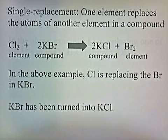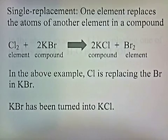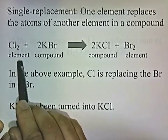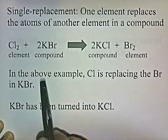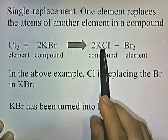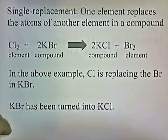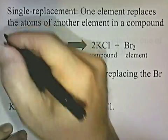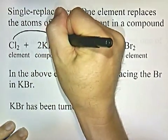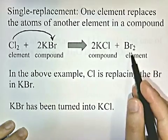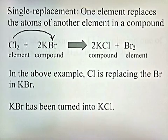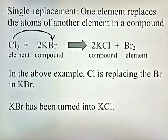Single replacement: one element replaces the atoms of another element in a compound. In this example, we've got chlorine gas, which is an element, reacting with KBr, which is a compound. After the reaction, we end up with a compound, KCl, and an element. Cl is replacing the Br in KBr — it knocks out the Br, which is left in elemental form, and Cl takes its place. KBr has been turned into KCl.